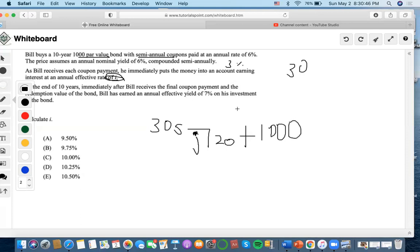Bill has earned an annual effective rate of 7% on his investment. So what did he invest in the bond? $1,000. And he received an annual effective yield of 7% reinvestment. So again, it says Bill has earned an annual effective yield, so we're not doing it to 20. It's not semi-annual, it's annual. And 10 years has passed.